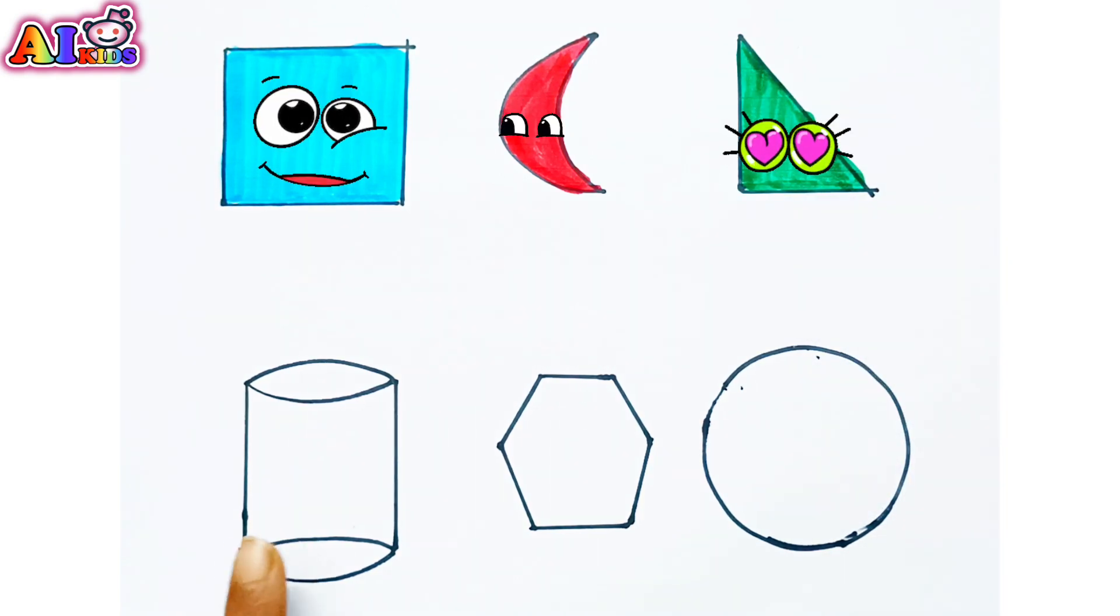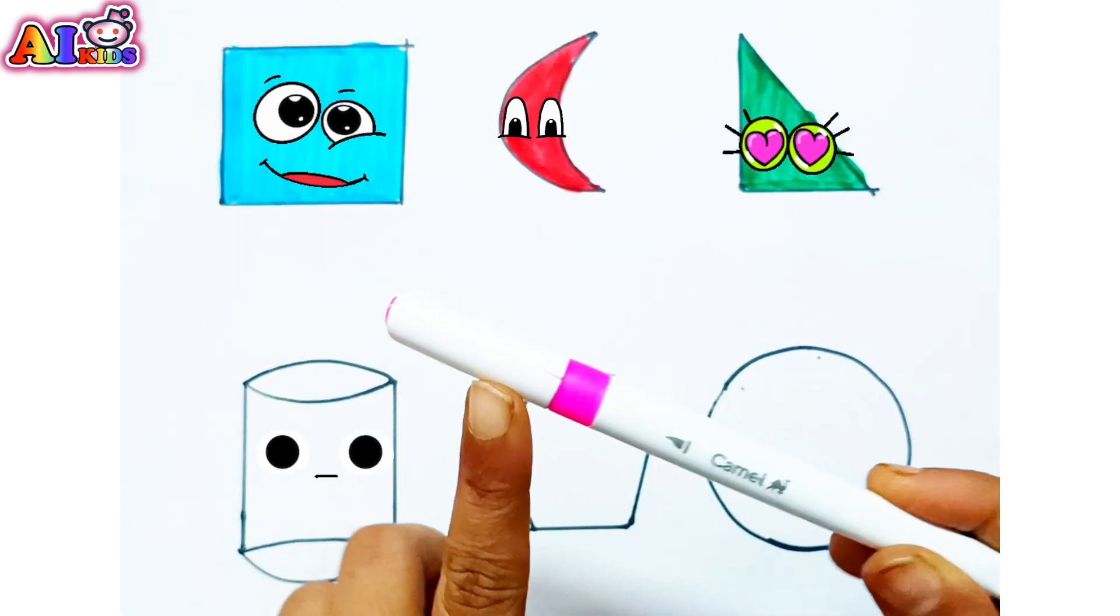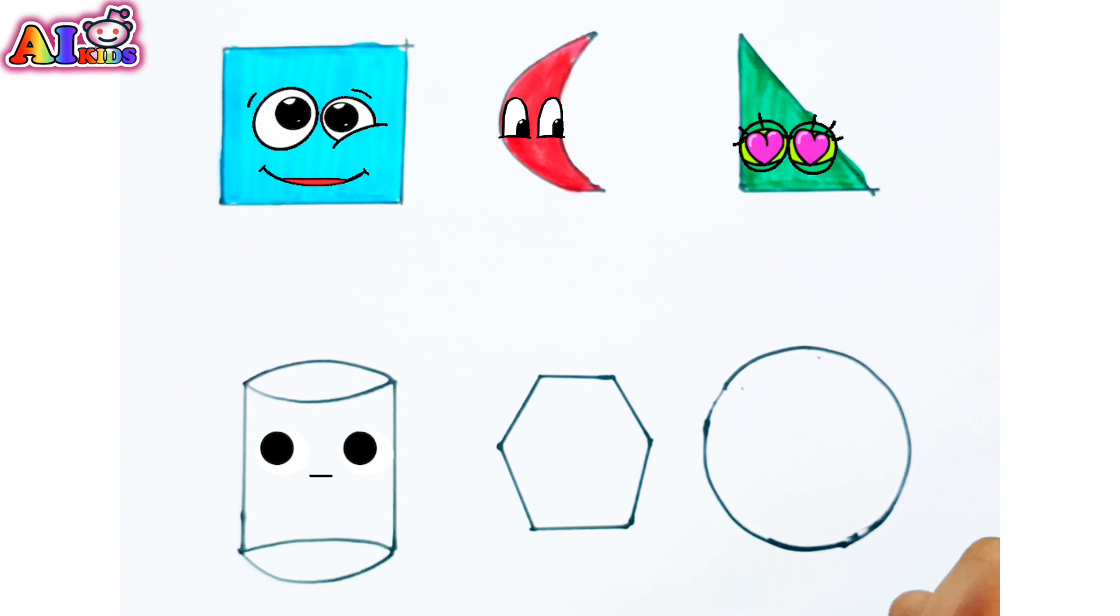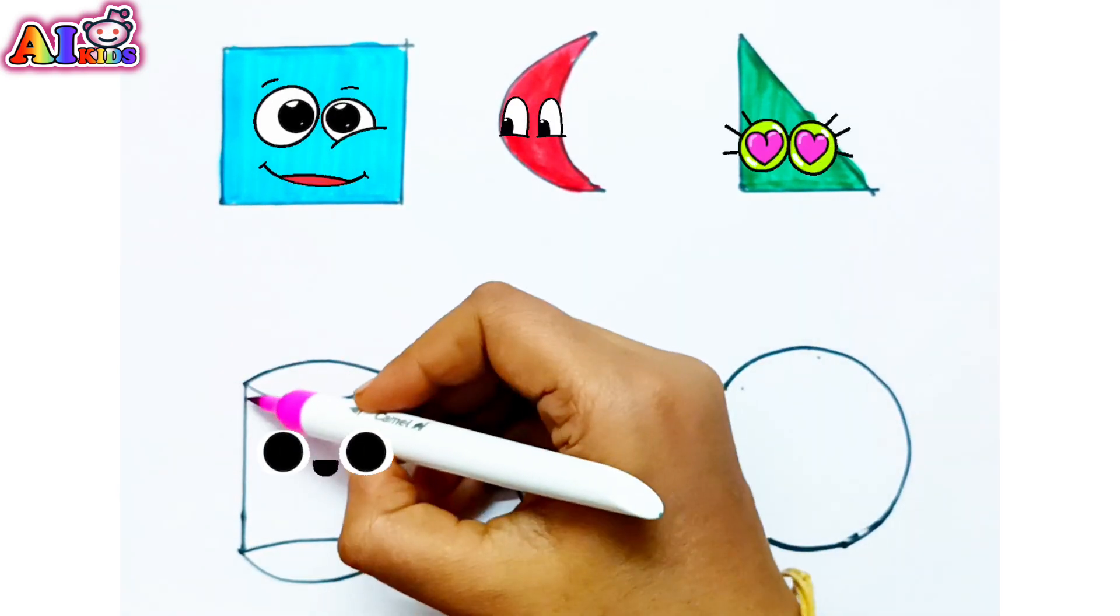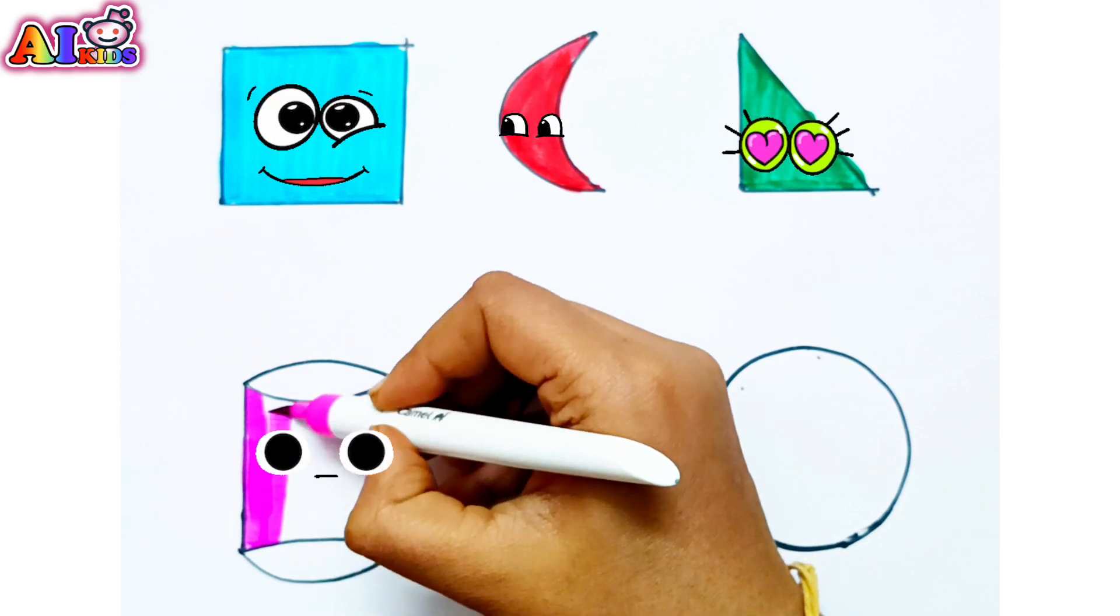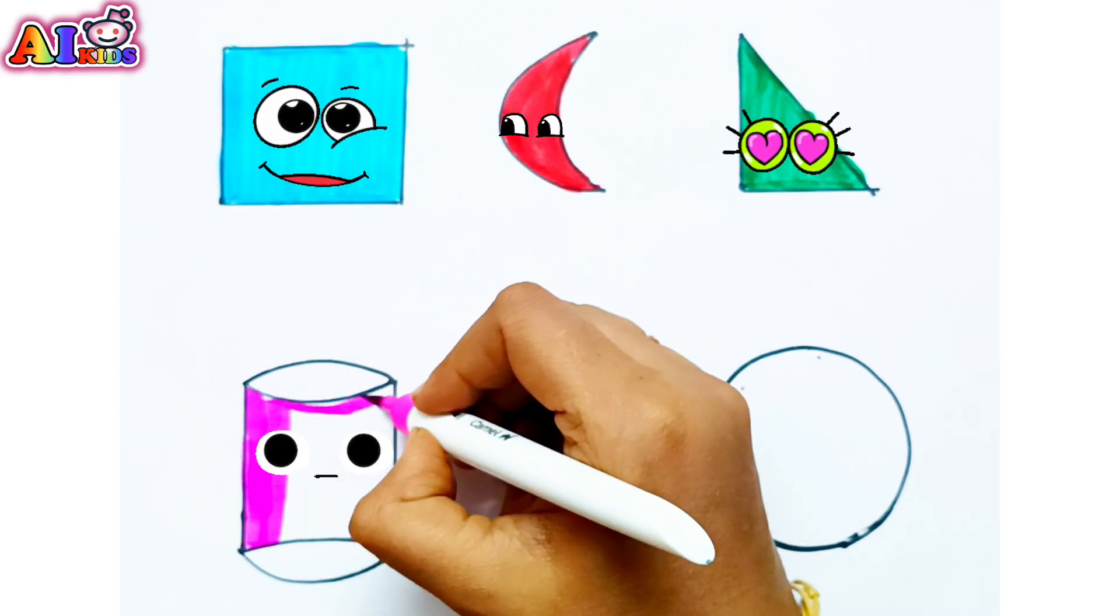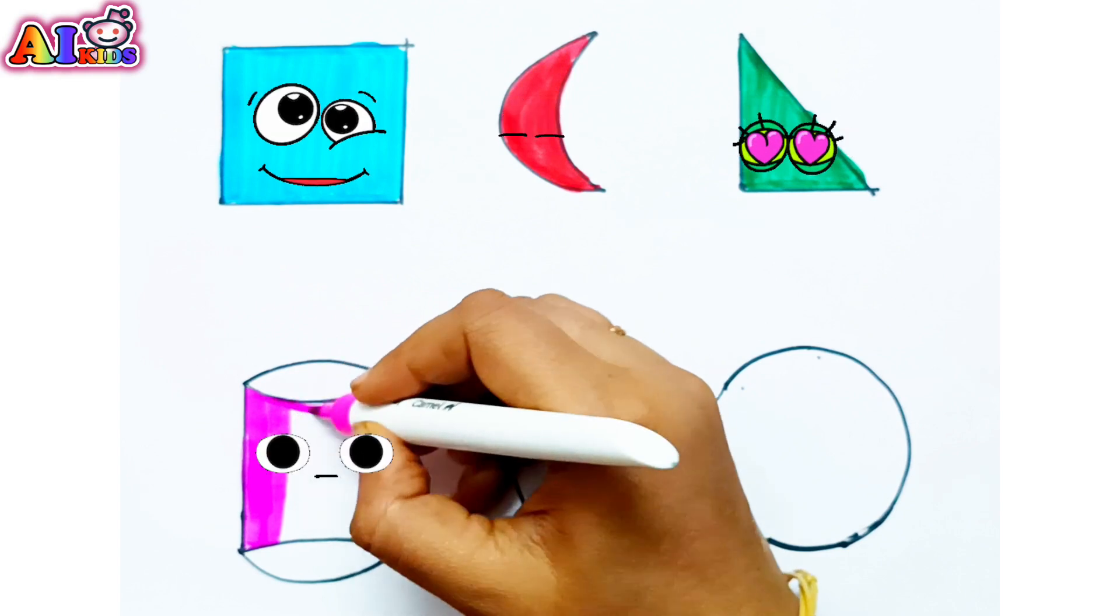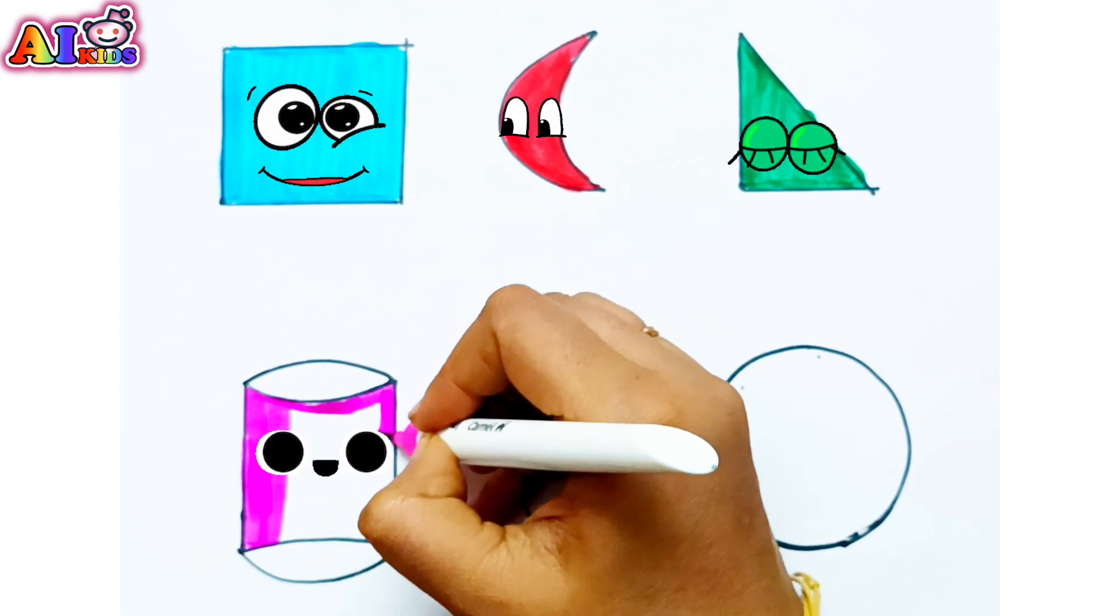This shape is cylinder. Let's color this with purple color. Purple, or you can also say this as pink. It's purple pink. Sometimes we also call it as violet color.